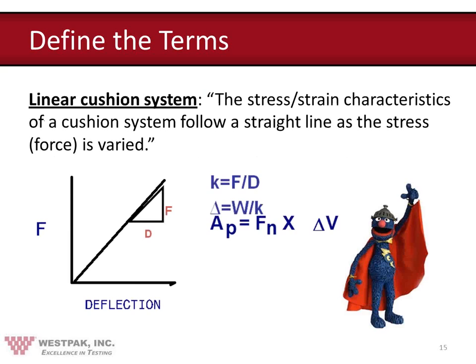The third key term is linear versus nonlinear cushion. All this means is that the stress-strain curve is either straight or it isn't. A force-deflection curve for a linear cushion plots a straight line — if you double the force, you double the deflection. Some cushions work as a linear spring and some don't. Using nonlinear cushion dynamics turns out to be a very useful tool.